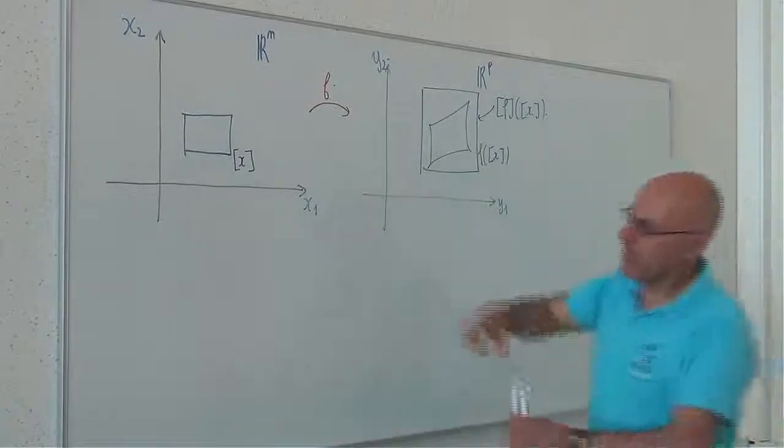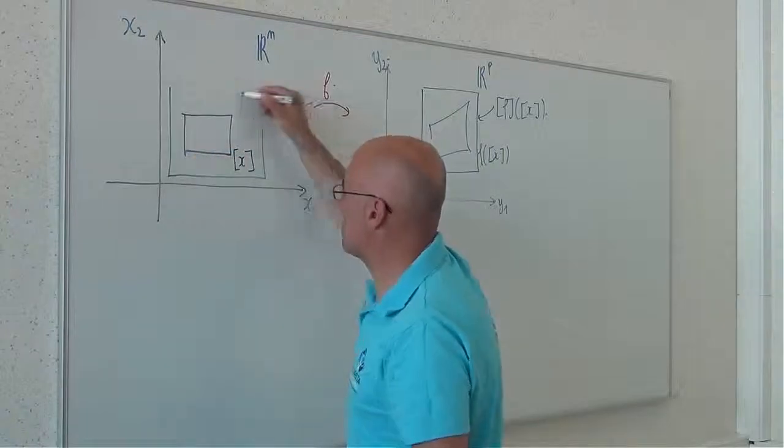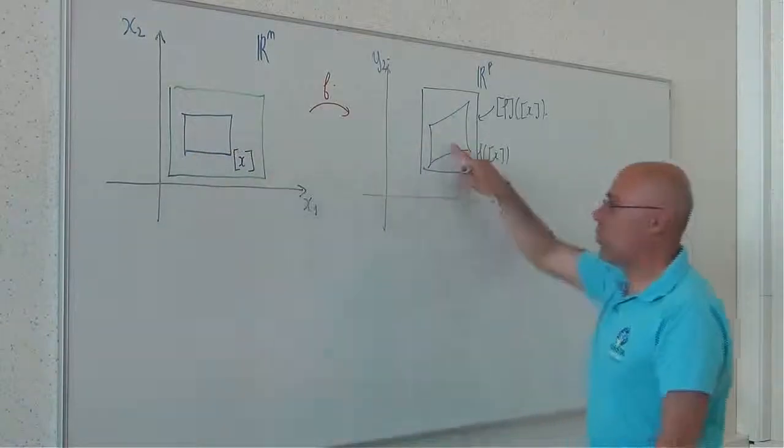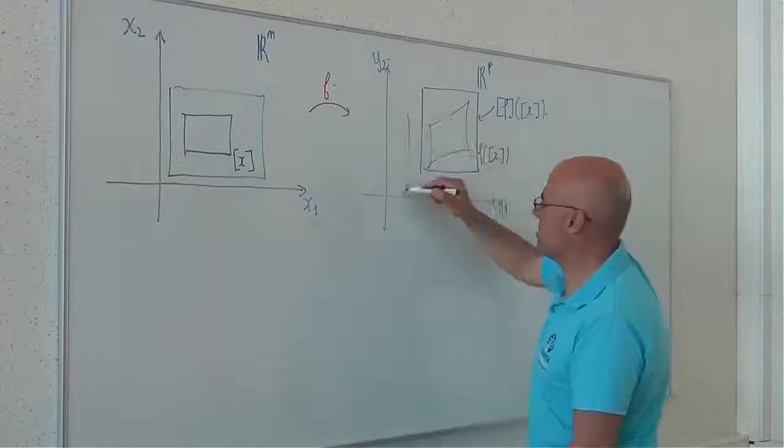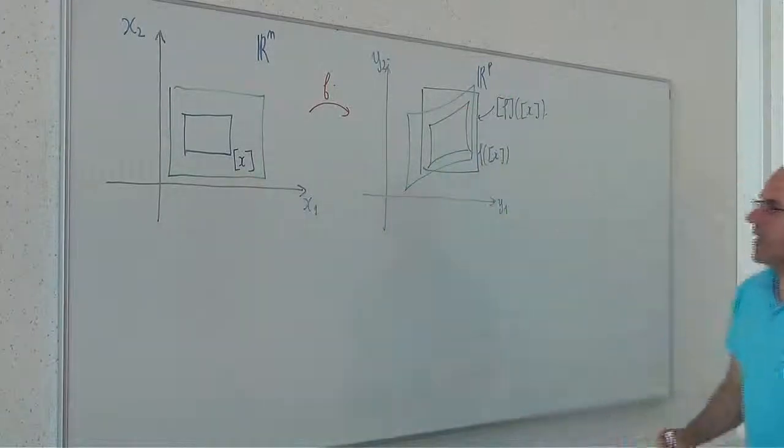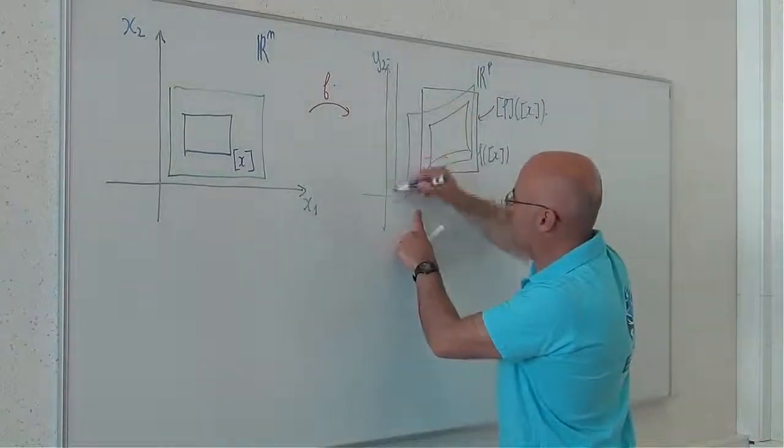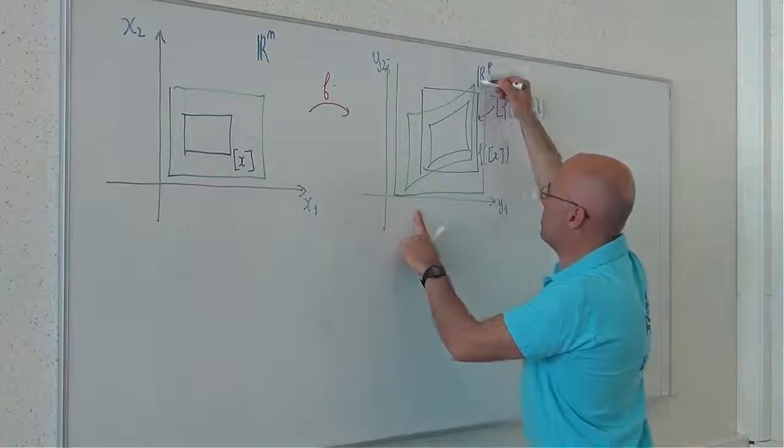Now, if I increase this box, I consider for instance this box, the image will be larger than this one. And the inclusion function will also be larger like this.